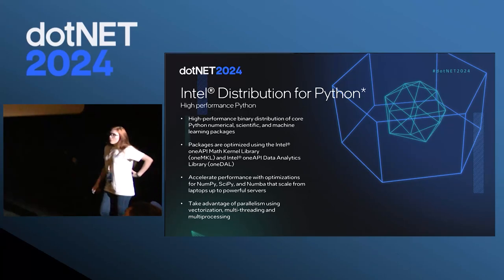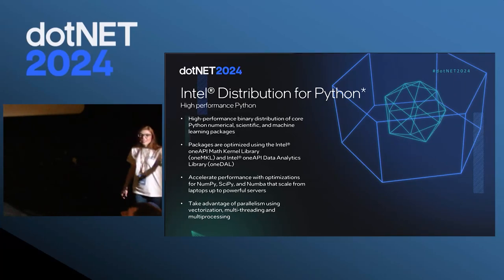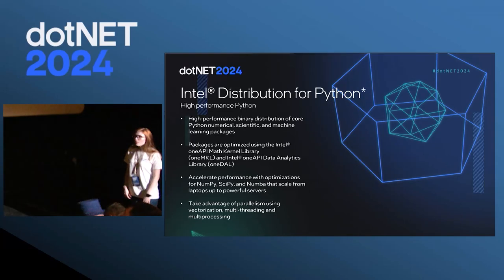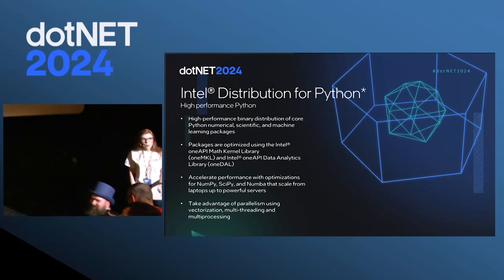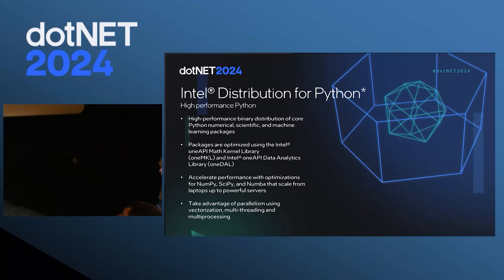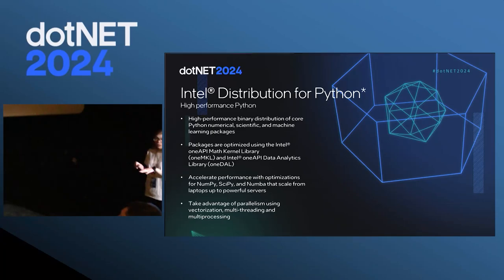But before that, let's start with Python. If you want to take advantage of OneAPI but stay within the Python ecosystem, we have the Intel Distribution for Python. What it does is contain wrappers around OneAPI libraries such as the Math Kernel Library and Data Analytics Library, so that you can get that boost in performance without having to do your own builds or even change your code. As part of Intel Distribution for Python, there are optimizations for popular libraries such as NumPy and SciPy, and also the Data Parallel Extensions for Python, which follow the same principle as OneAPI — you can code once for CPU and also for GPUs.